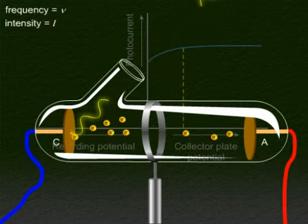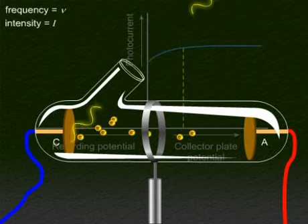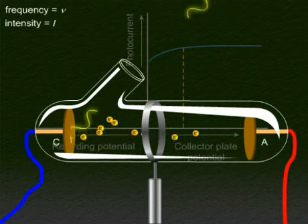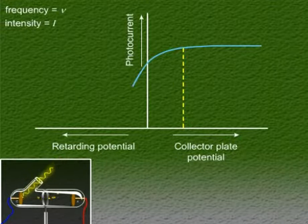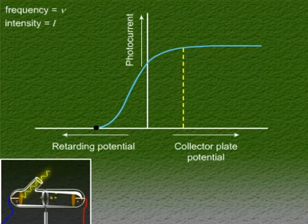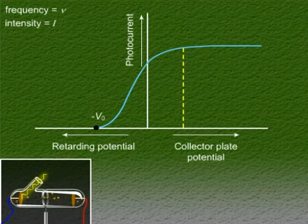At a certain negative potential of the collector plate, you will find that all the emitted electrons are repelled by the collector and no electron in effect reaches it. And so, the photocurrent becomes zero. If you look at the graph, this sharply defined critical value of the negative potential V0 of the collector plate is known as the cutoff or stopping potential.